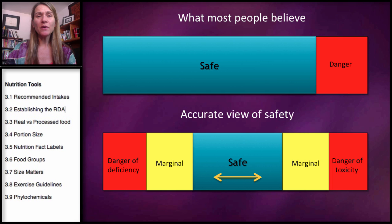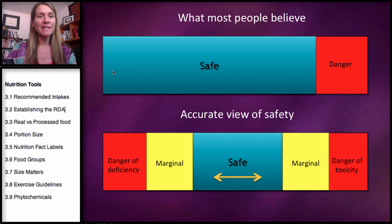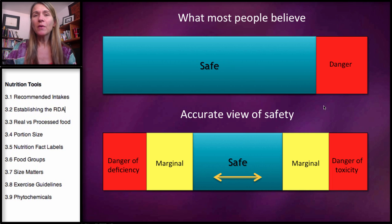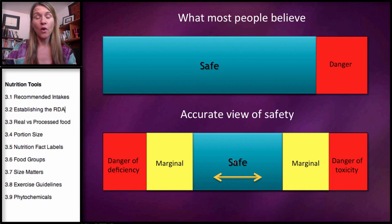What most people think about nutrient intake levels — and when I say nutrients, I'm talking about vitamins and minerals — is that there is a safe range that's pretty large and then a really small danger zone. Well, the reality is that there is actually just a small safety range, and our DRIs, or our recommended dietary allowances, are generally put in this small area right here where the arrow is.